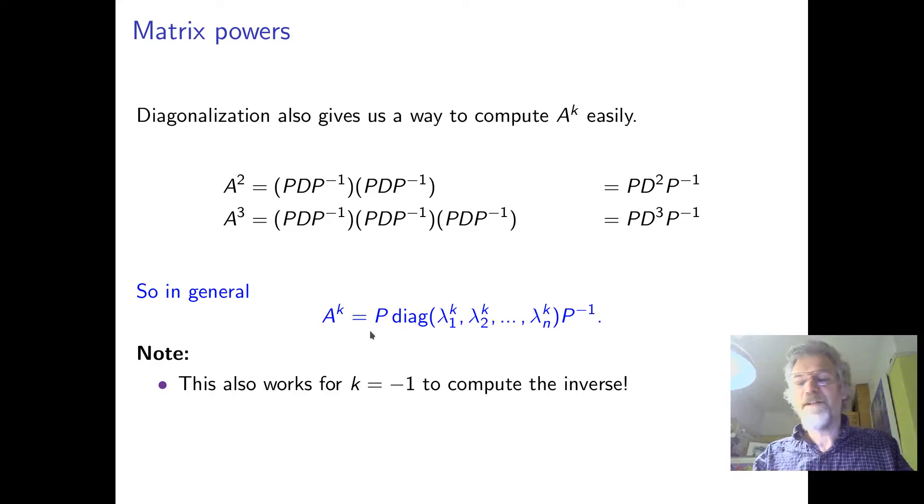So, you want, you know, a hundredth, a thousandth power, whatever, of a matrix. Then, if you can diagonalize it first, then you just have to raise the diagonal to those powers. And if the powers are negative, and the matrix is non-singular, then you still just do the powers, because the inverse is just a negative power.